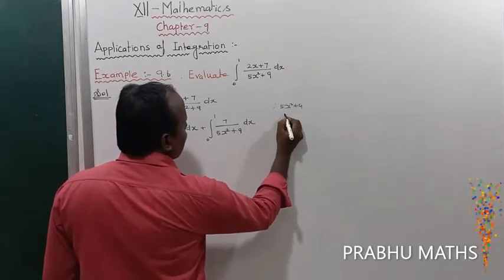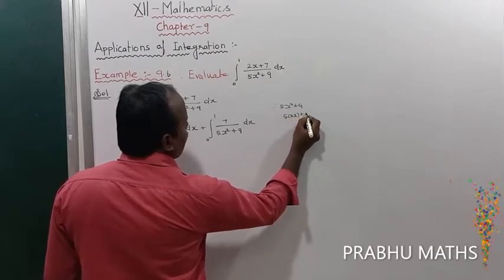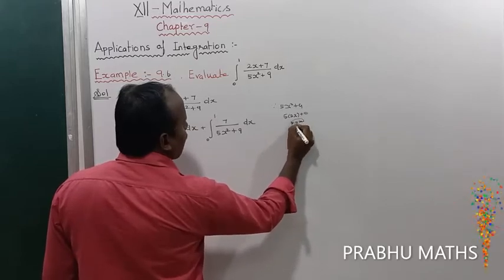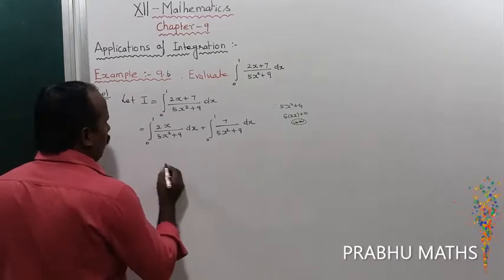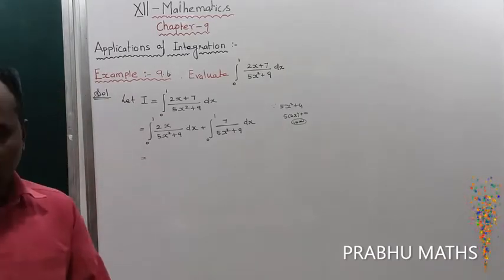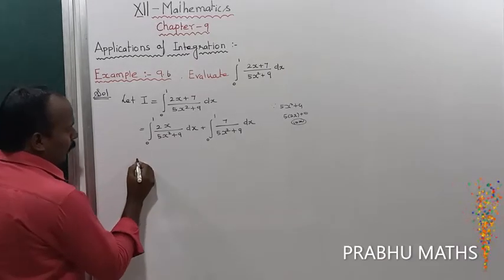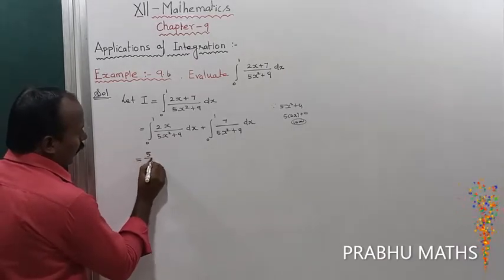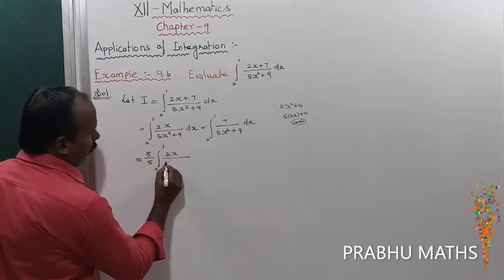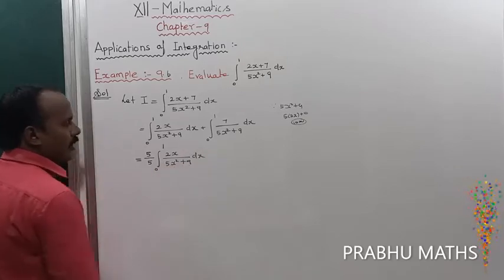The differentiation of 5x² + 9 is equal to 5·2x + 0, which is 10x. We already have 2x in the numerator, so we multiply numerator and denominator by 5. That gives us (1/5) · ∫₀¹ (10x)/(5x² + 9) dx.